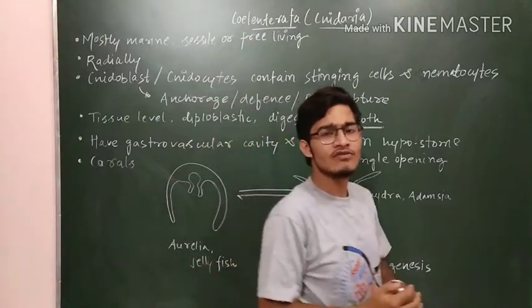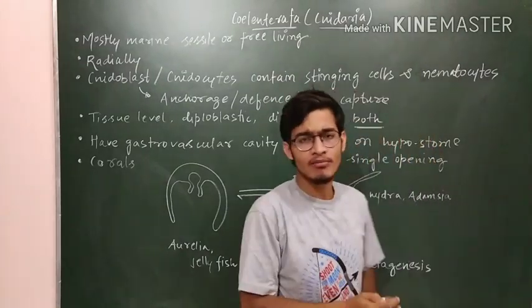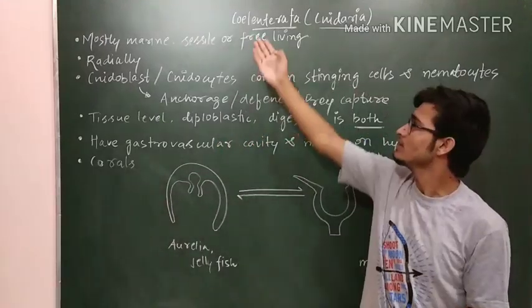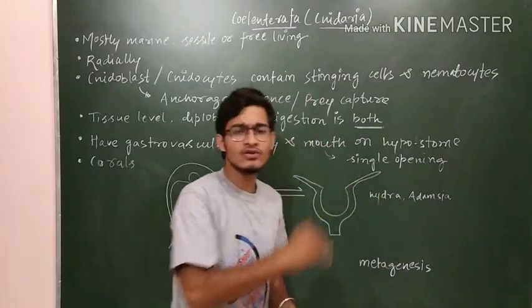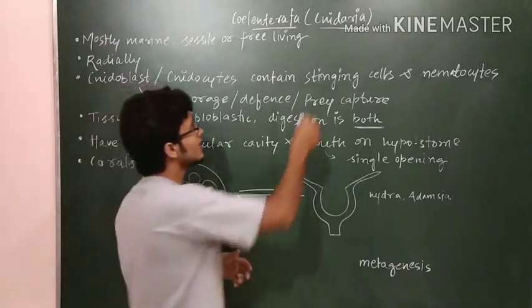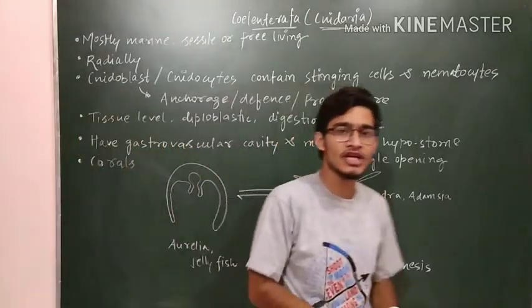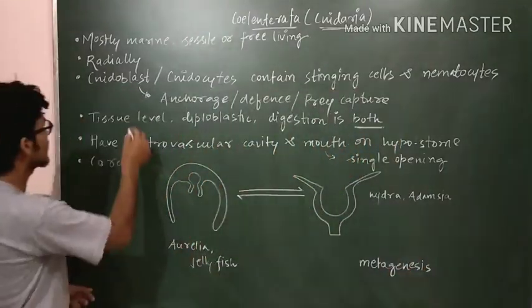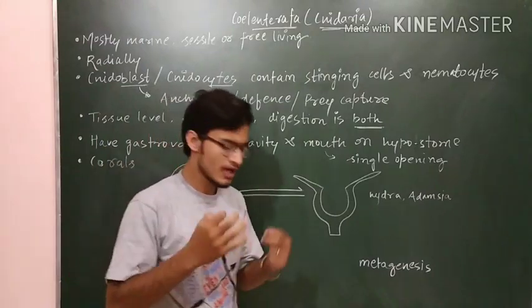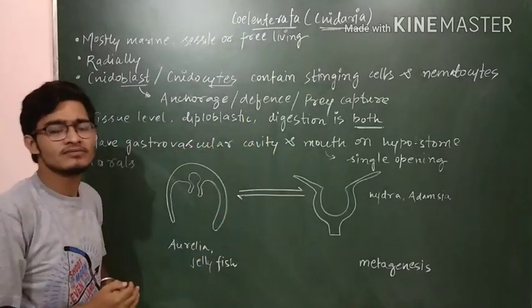Each and every phylum has some important peculiar characteristics which will only be found in that phylum. For example, in sponges or Porifera we had the water canal system. Similarly, Coelenterata will also have some peculiar features, and that feature is the nidocyte or the nidoblast. As the name indicates - Cnidaria - the 'cnid' is taken from nidocyte or nidoblast cells.